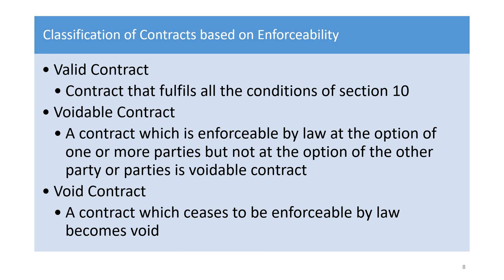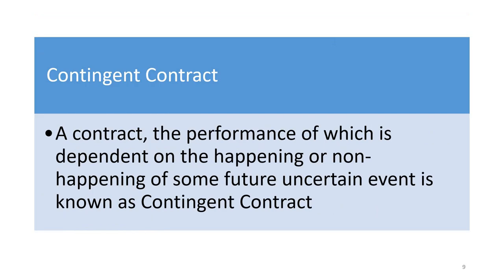There is also the contingent contract. Contingent means something that may or may not happen — we are not sure whether it will happen or not, like whether it will rain. A contingent contract is one where the performance is dependent on the happening or non-happening of some future uncertain event. Contingency means something that can happen or cannot happen, and if your contract depends on such an uncertain future event, it is a contingent contract.